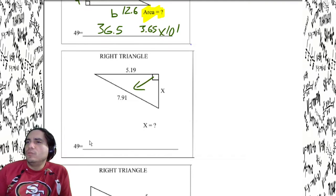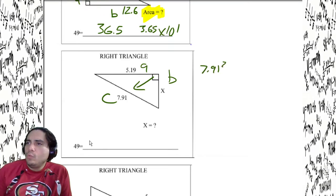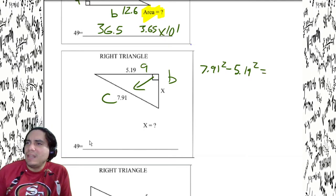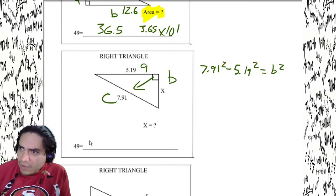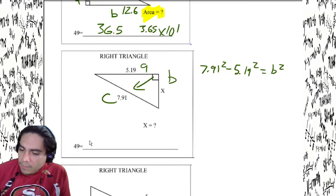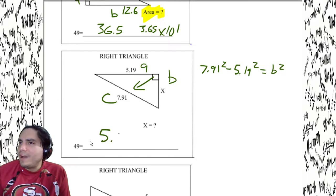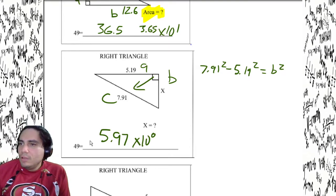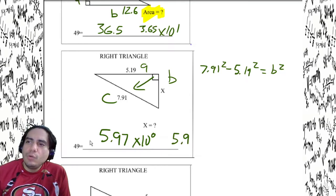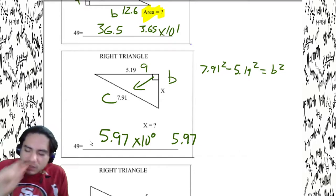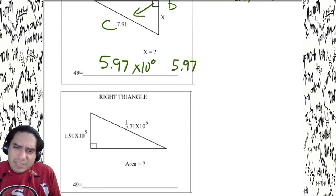Next problem: we've got c, we've got a, we're missing b. So we subtract. 7.91 squared minus 5.19 squared equals b squared. Calculate: 7.91 squared minus 5.19 squared, subtract, equals 35.6 or 3.56 times 10 to the first. Then square root: 5.97 times 10 to the zero. That's a completely reasonable answer.